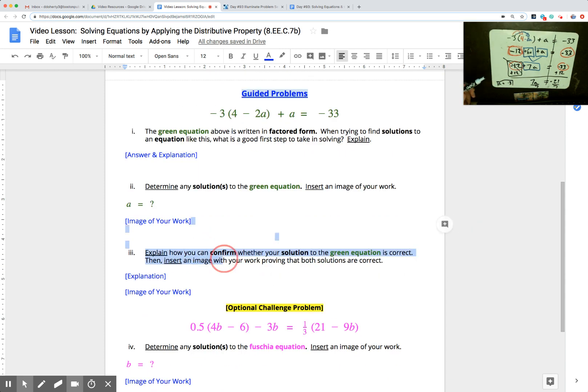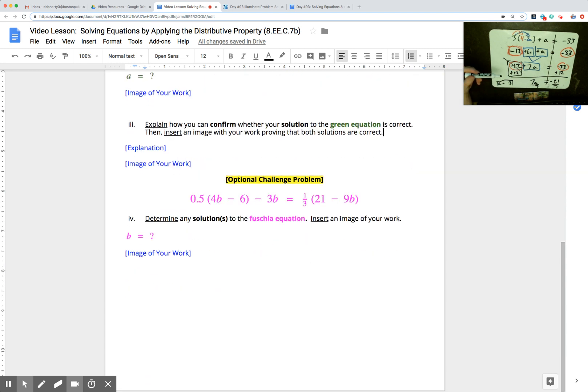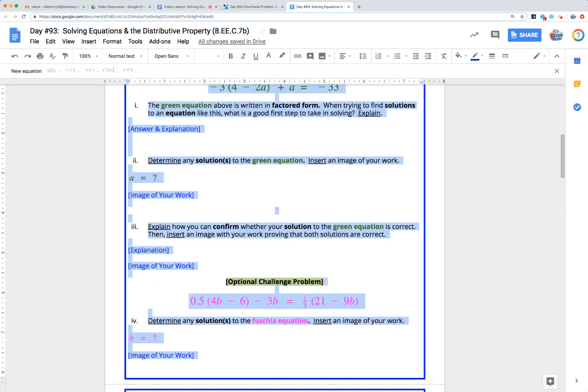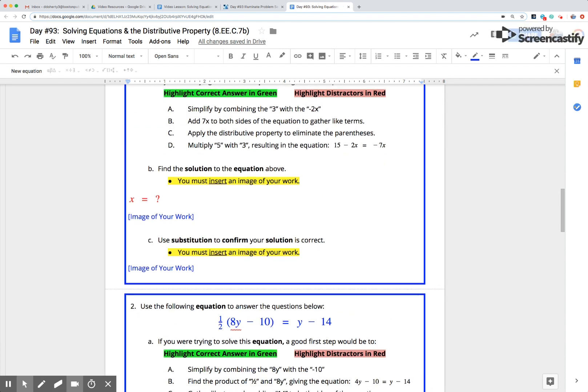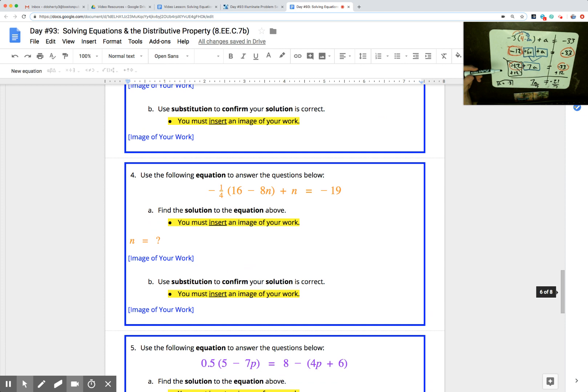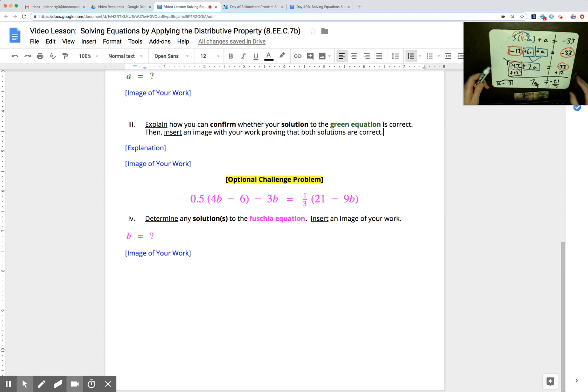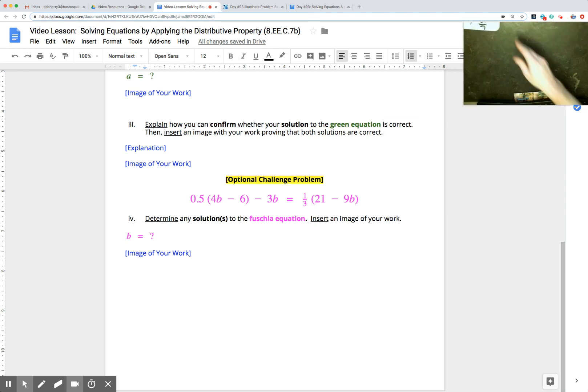That's what part 3 gets into. Explain how you can confirm whether your solution a equals negative 3 is correct. So on a different whiteboard you're going to have to plug in a negative 3 for a and check my work, check your work, see if it really works. At this point I think most of us should be leaving the guided problems, leaving the video lesson and get started on the practice problems. You're in good shape to start doing some of these difficult problems like number one, number two, number three. But when you get to problem four and problem five, I'm going to give you one more difficult equation here, the optional challenge problem, to take a look at.